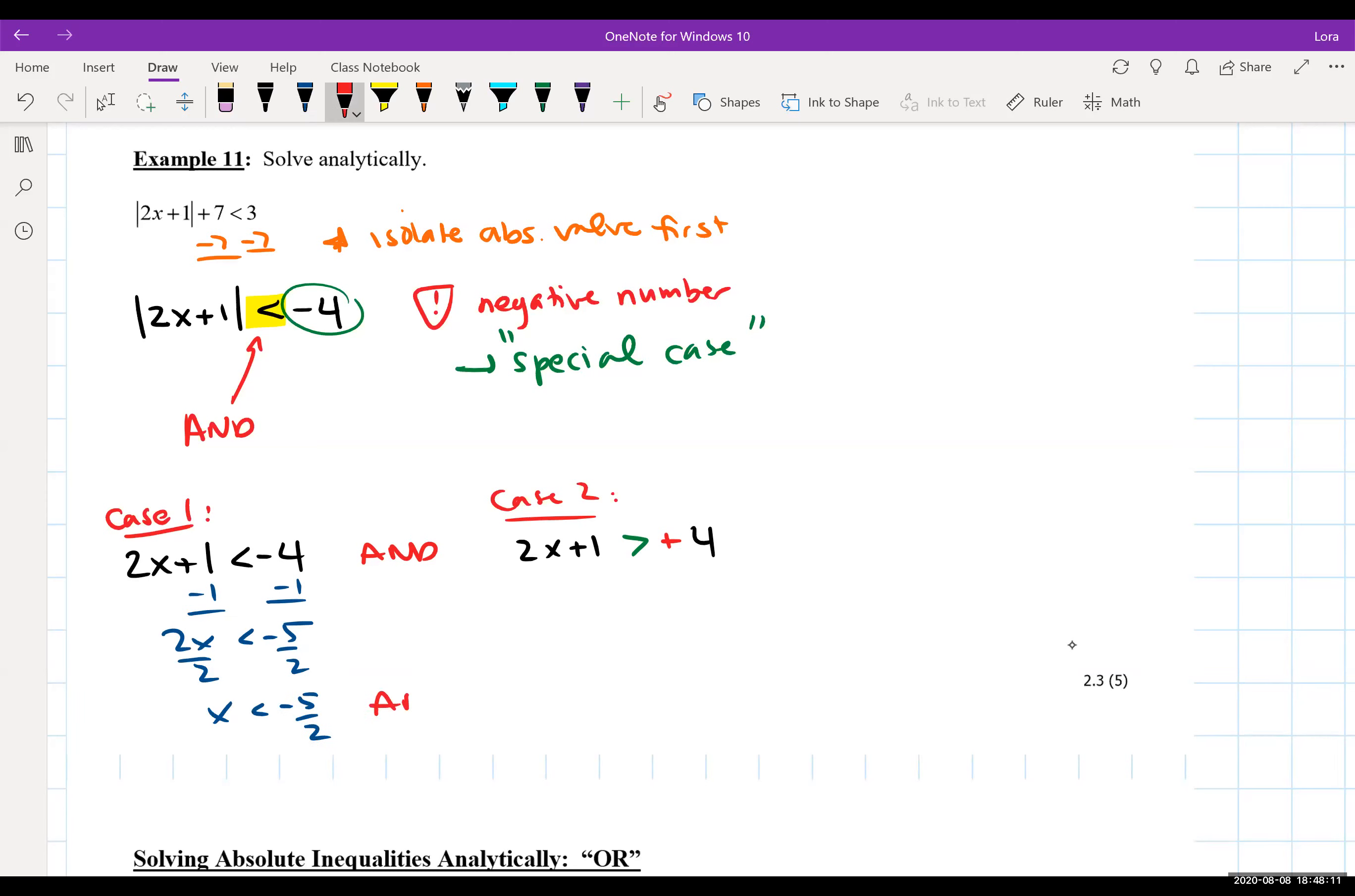Don't forget the link word and. Same idea on the other case, subtract one from each side, we get 2x greater than three, divide both sides by two, we get x is greater than three halves.